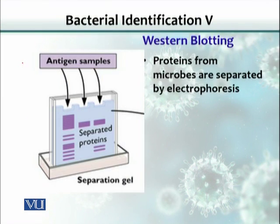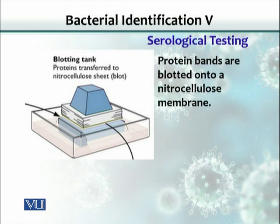In Western blotting, what is done basically is that you take all the antigens, extract the antigens from a single colony of a bacterium, and then you separate those proteins through electrophoresis. Proteins could be separated based on their molecular weight through the gel. When these proteins get separated, we can transfer these proteins onto another membrane called nitrocellulose membrane by putting high salt and soaking the gel with the high salt.